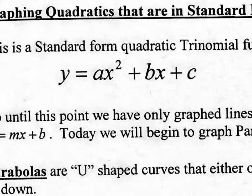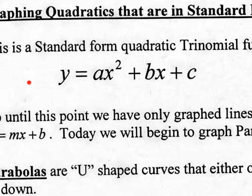If the A value is positive it opens up, which means you're going to have a minimum value — it goes down to some lowest point and then comes back up. If it opens down, it has a maximum value — like throwing a ball up in the air, it reaches a maximum height and comes back down. So the A value tells you if it opens up or down, and whether you have a maximum or minimum.